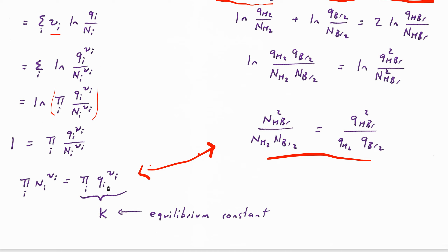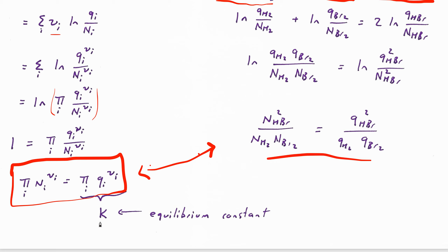Just like in the case for ideal gases, this is our general result for when a system is in equilibrium — the relationship between how many molecules of each type there are and this product of partition functions. The partition functions at a given temperature are just numbers, so the ratio q(HBr)²/(q(H2)·q(Br2)) is simply a collection of numbers we call the equilibrium constant. If we know the partition functions, we can calculate this equilibrium constant. How we use this equation will become clearer after we do a few examples.